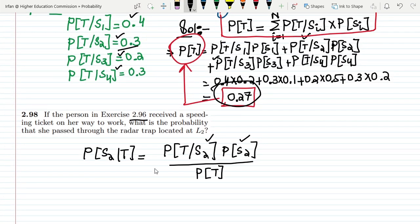Let me write all these values here. This is the probability of trapping at S2, so this is 0.3 multiplying it with the probability at S2, which is 0.1, and dividing it over the probability of trapping, which is 0.27.